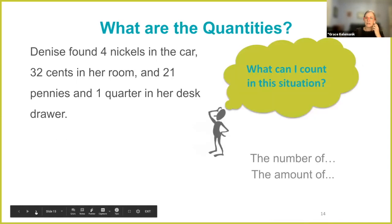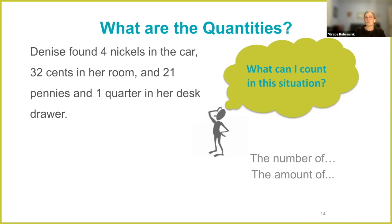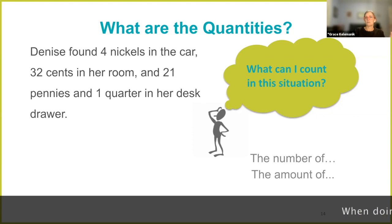Let's test drive this idea about quantities. Here's another little situation: Denise found four nickels in the car, 32 cents in a room, and 21 pennies and one quarter in her desk drawer. What I would love for you to do is take a minute and identify all of the quantities in this situation. Ask yourself: what can I count in this situation? And when you answer that question, start with 'the number of.' Let me give you about 30 to 40 seconds of individual work time.